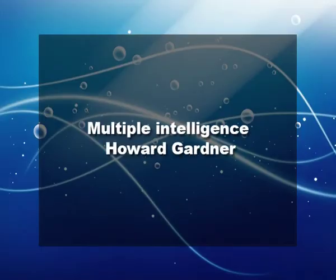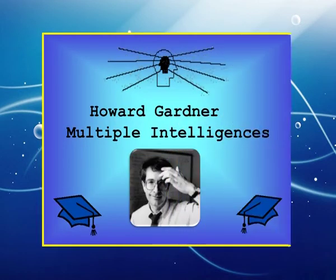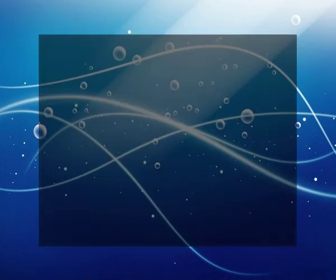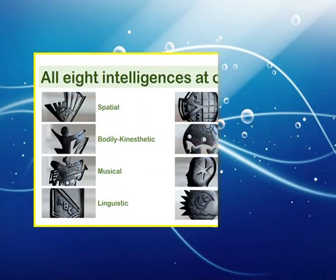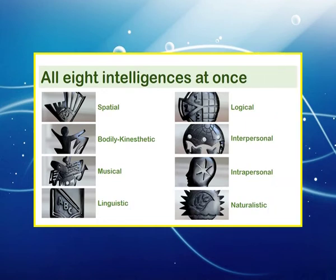Now we will turn to multiple intelligence theory, given by Howard Gardner. Gardner has proposed a theory of multiple intelligences. He originally identified seven components of intelligence in 1983. He argues that these intelligences are relatively distinct from each other, and that each person has some level of each of these seven intelligences. More recently, he added an eighth intelligence to his list in 1997.